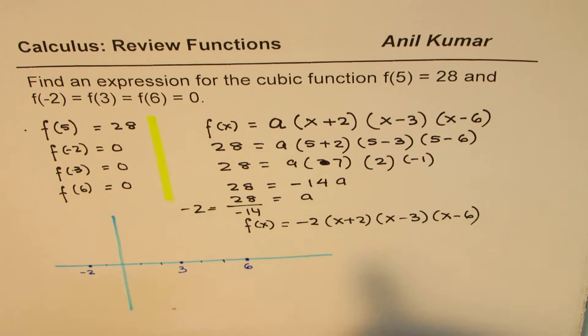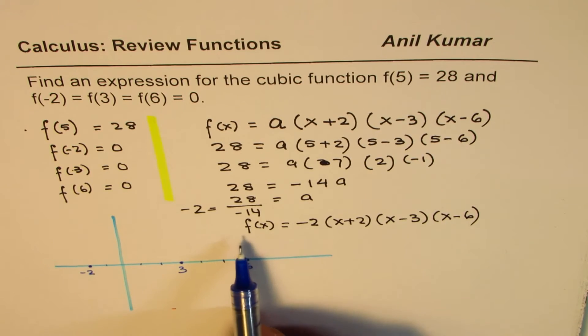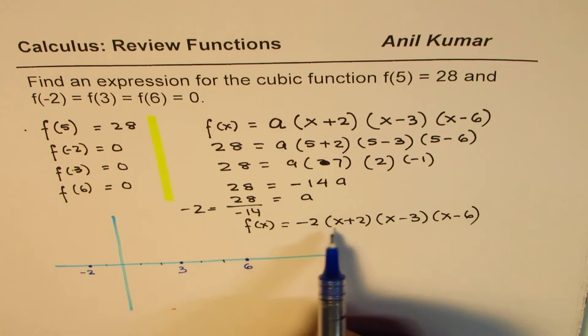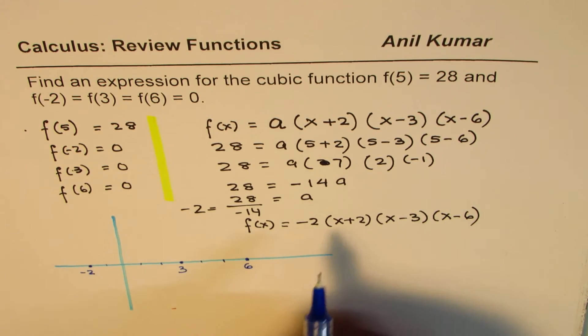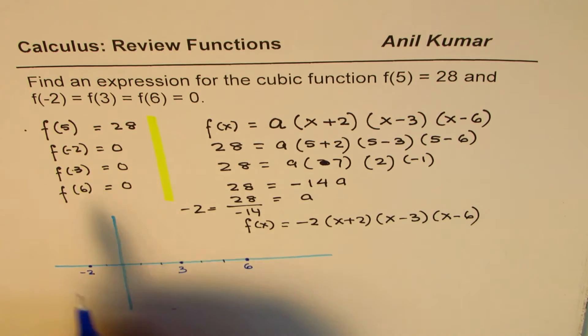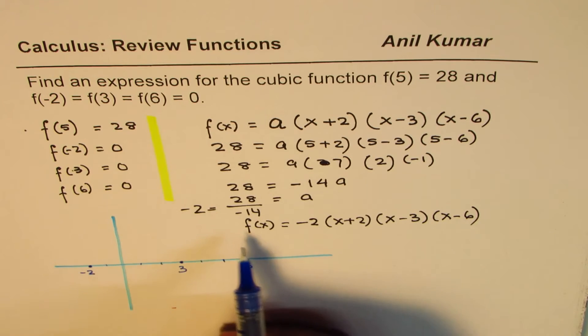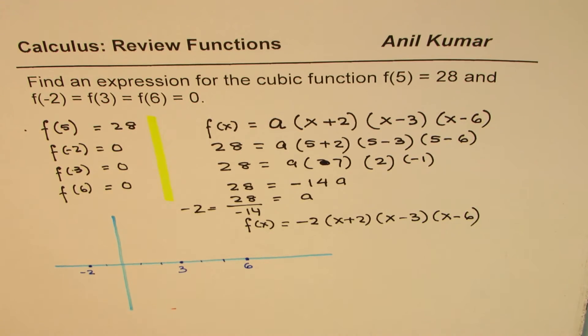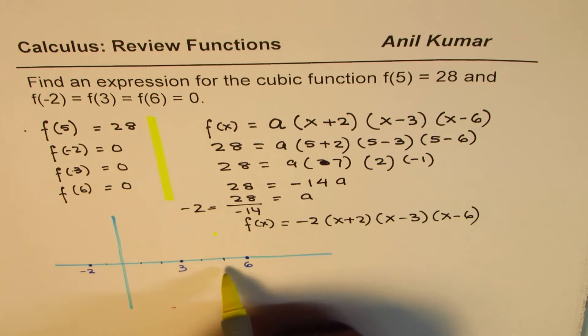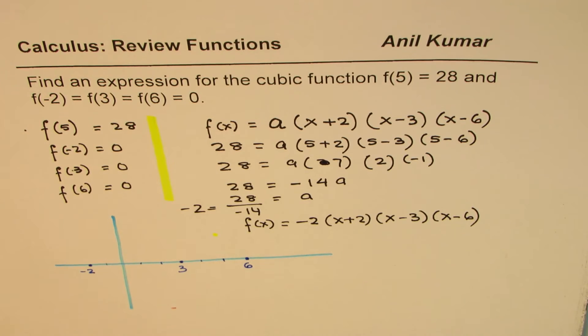Let's try to sketch this function. To sketch this function, we have taken care of these zeros. Now we have to see where is f(5). f(5) is 28, so it's a positive value. So we are expecting 5 is kind of positive here. So in 5, we need the function to be positive.